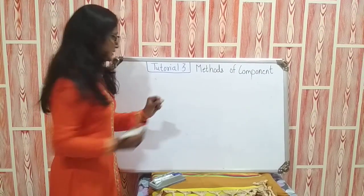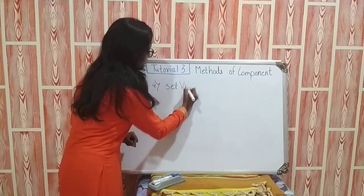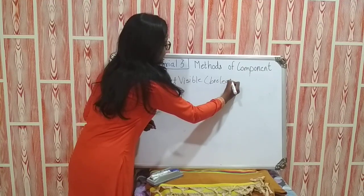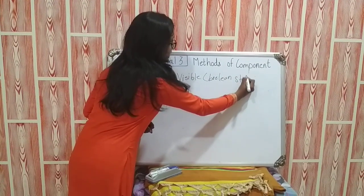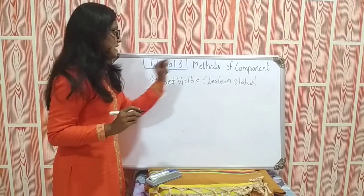Moving towards the next method, which is the last method, the fourth one, setVisible. It contains one parameter, that is boolean. Boolean is nothing but true or false.